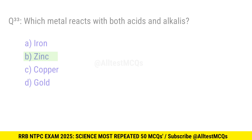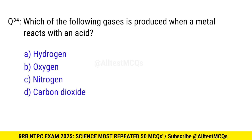Question 34. Which of the following gases is produced when a metal reacts with an acid? Correct option is A, hydrogen.